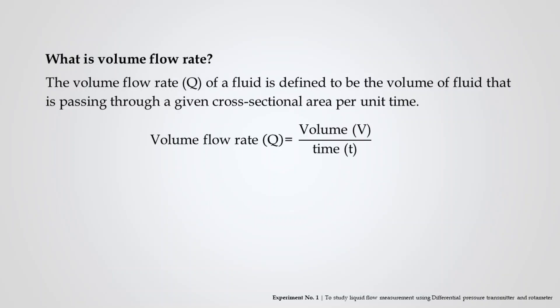The volume flow rate, Q, of a fluid is defined to be the volume of fluid passing through a given cross-sectional area per unit time, and is given by the following equation: Volume flow rate Q equals volume V that passes through a given area per unit time T.